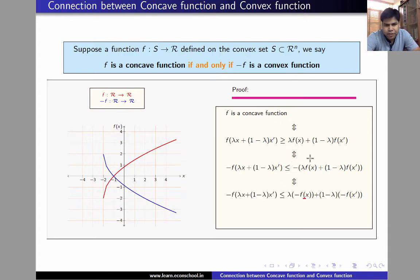This can be rewritten as minus f lambda x plus 1 minus lambda x prime is less than or equal to lambda times minus fx plus 1 minus lambda minus fx prime, which is precisely the convexity of minus f. And the implication also holds in the reverse direction. So we have shown that f is concave if and only if minus f is a convex function.